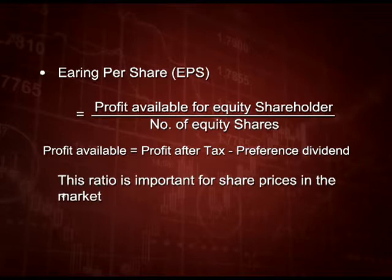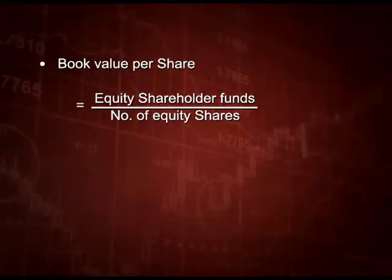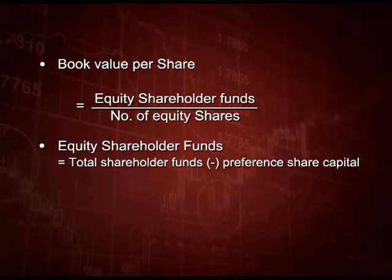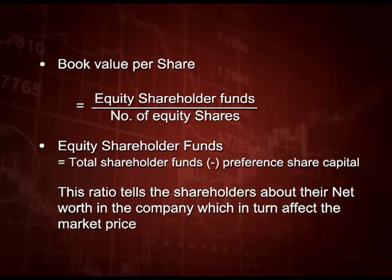This ratio is very important for share prices in the market. The next ratio is book value per share — as the name suggests, the value as per the books of account. This is calculated by dividing equity shareholder funds by the number of equity shares. Total shareholder funds comprise preference share capital also; if we deduct preference share capital from total shareholder funds, that gives us equity shareholder funds. This ratio tells the shareholder about their net worth in the company, which in turn affects the market price.